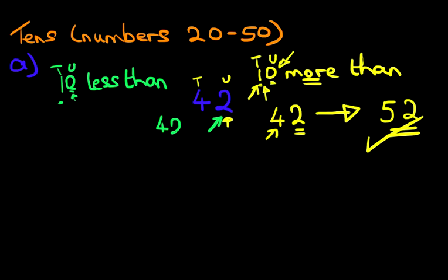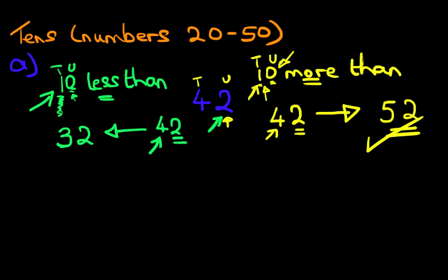Let's write this in — 42. We're doing less than, so we're going to go backwards. This number 2 is not going to change, so let's write that down. We've now got to work out what this digit is over here. We've got 4, and we're going to go back by this 1 over here. So we start with 4, and we're going back by 1, counting backwards. The number is 3. And that is our answer.